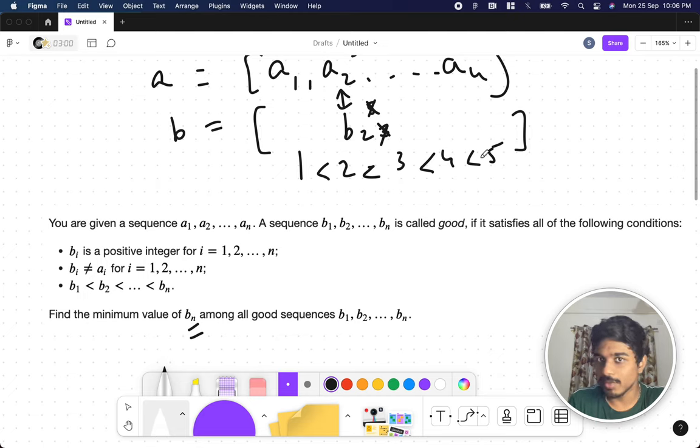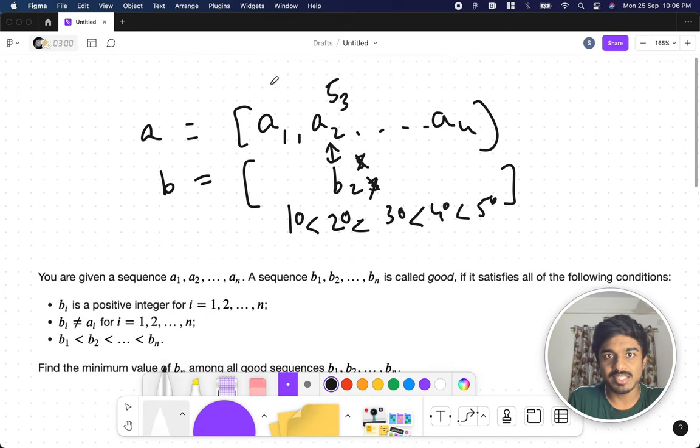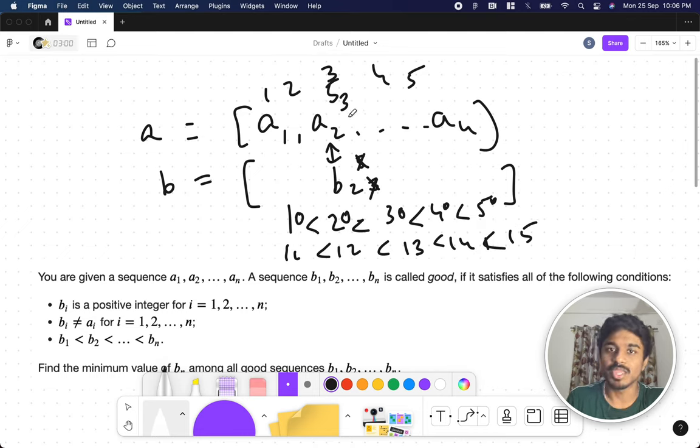They are asking: find the minimum value of bn among all good sequences b1, b2, up till bn. For example, if a is 1, 2, 3, 4, 5, then 10, 20, 30, 40, 50 is a good sequence, or 11, 12, 13, 14, 15 is also a good sequence. We need to find what is the minimum value of the last value of b that is possible.